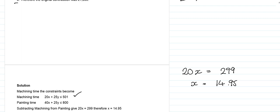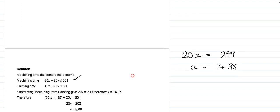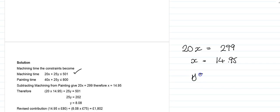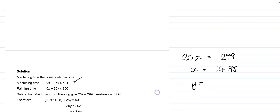Once we have x equals 14.95, we can then substitute it into one of our equations. It doesn't matter which one. That will give us y equals 8.08.